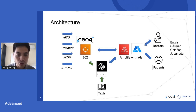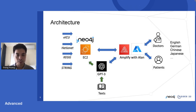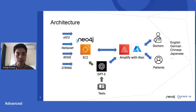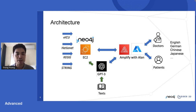We also use GPT-3 as a literature extraction tool. We have a lot of medical research papers each year, and we would like to keep the knowledge graph up to date. The way we do it is that we split the literature, feed it into GPT-3, and let GPT-3 extract subject-verb-object triplets. These triplets can then be imported into Neo4j to make the knowledge graph current.